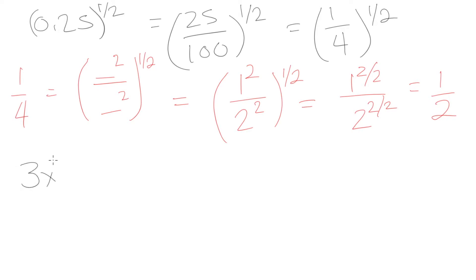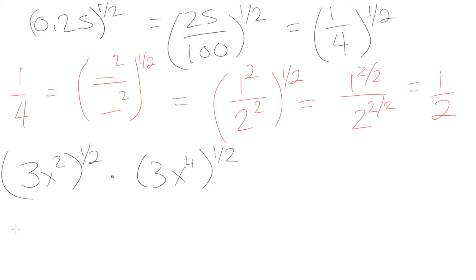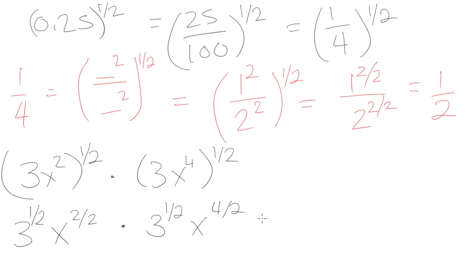Let's do another example: (3x²)^(1/2) multiplied by (3x⁴)^(1/2). From our exponent laws this equals 3^(1/2) times x^(2 × 1/2), which is x^(2/2), multiplied by 3^(1/2) times x^(4 × 1/2), which is x^(4/2). This simplifies to 3^(1/2) times x — since 2 over 2 is 1 — times 3^(1/2) times x², since 4 divided by 2 is 2.